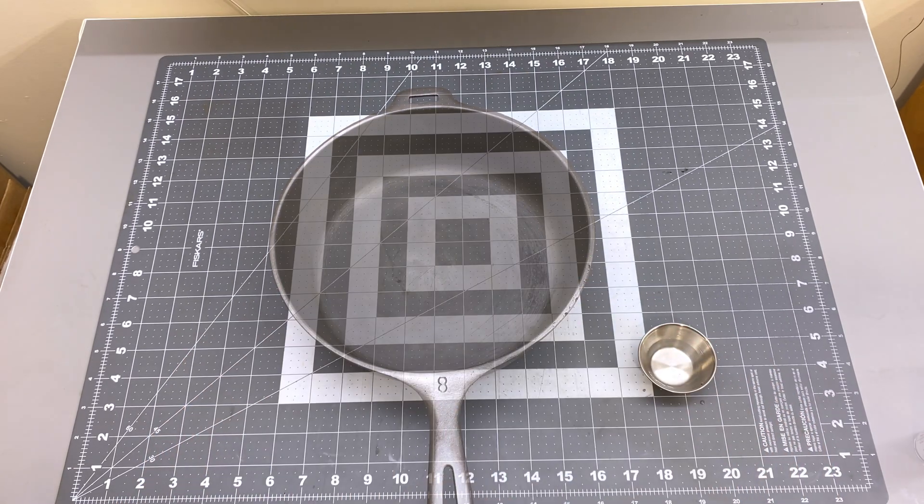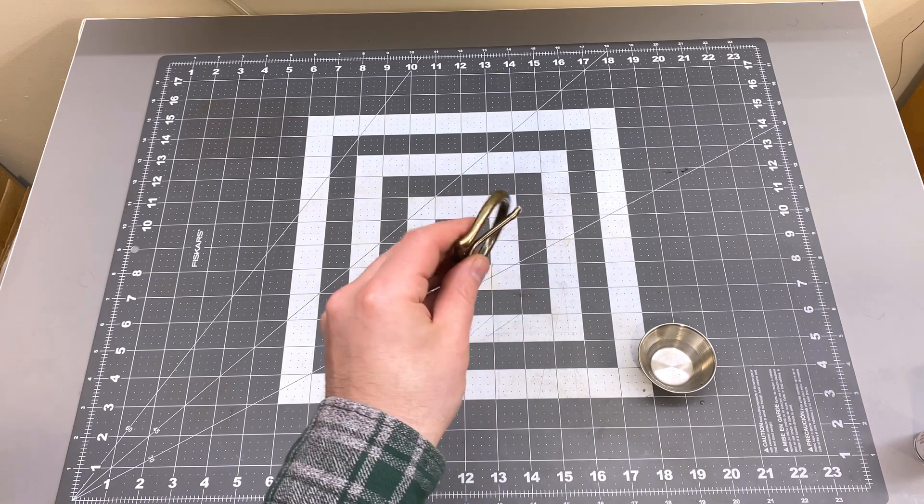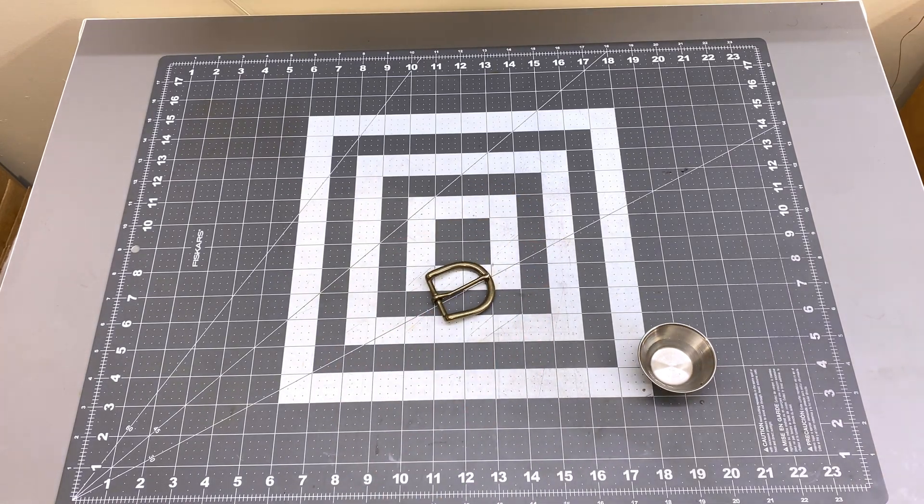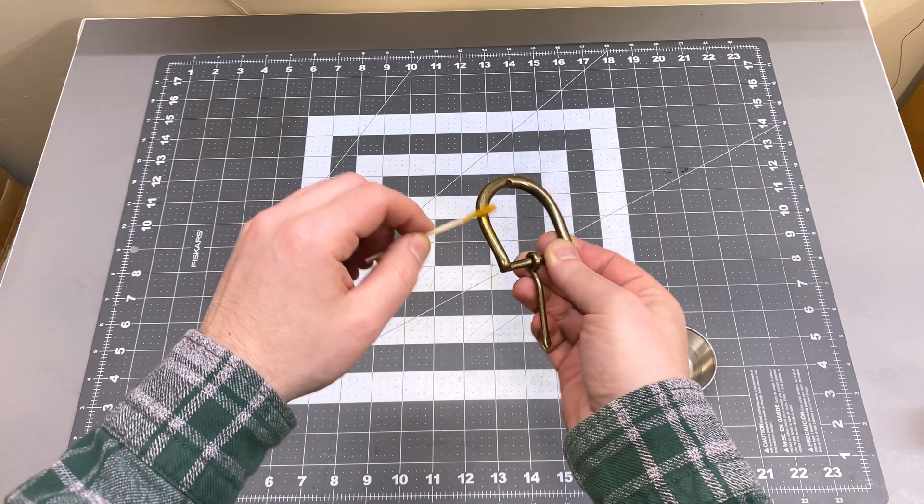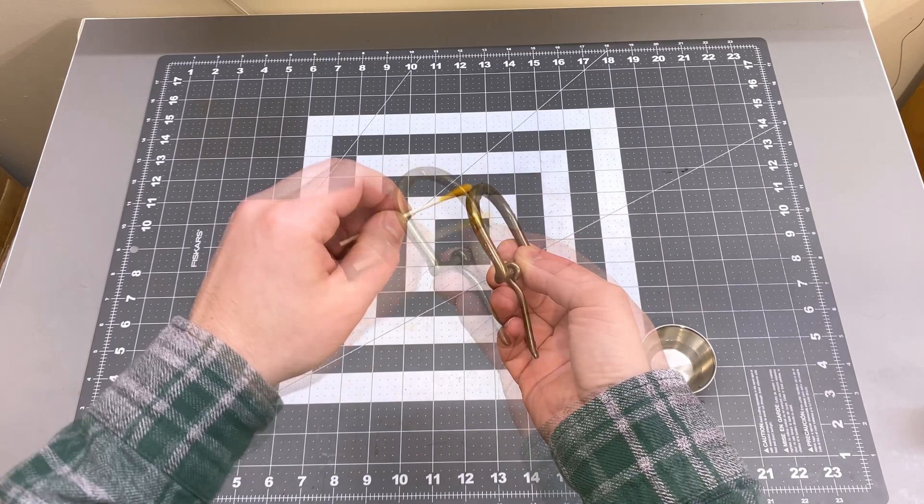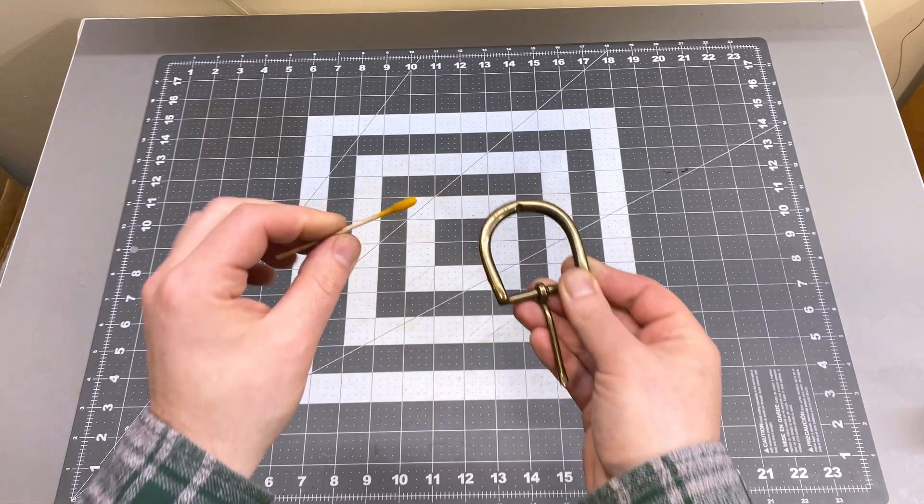So while this is encouraging so far, I do want to test these swabs to see if they actually pick anything up. So I've got some low lead brass here, which should be under 100 parts per million, and I want to see if this swab will pick anything up.